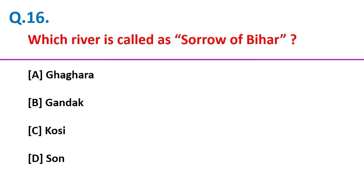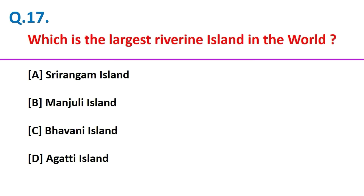Which river is called the Sorrow of Bihar? Kosi. Which is the largest river island in the world? Majuli Island.